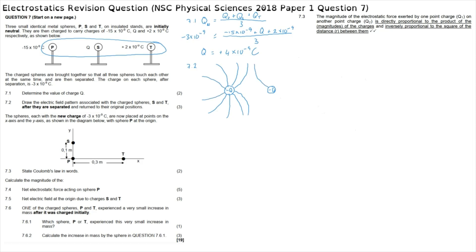Since both charges are negative, the field lines must point towards the negative charges. The direction of a field line is always drawn in the direction that a positive charge would move if placed at that point in the electric field. Question 7.3: Coulomb's law states that the magnitude of the electrostatic force exerted by one point charge on another is directly proportional to the product of the charges and inversely proportional to the square of the distance between them.